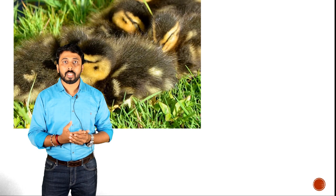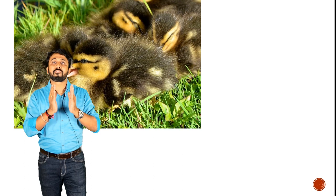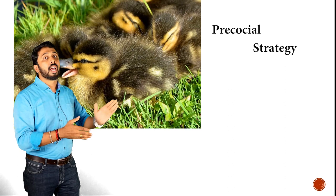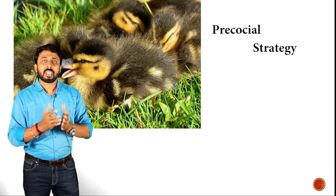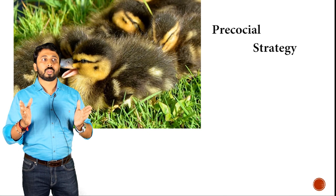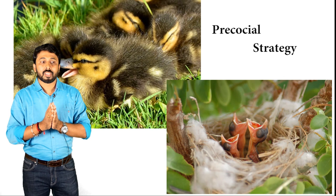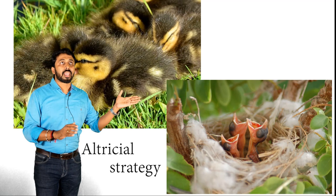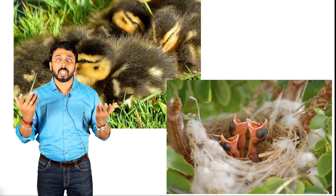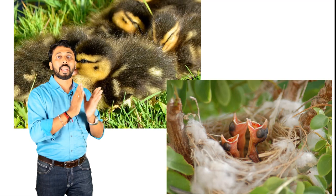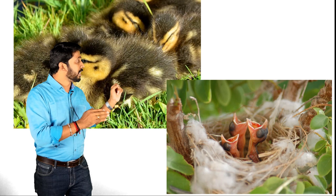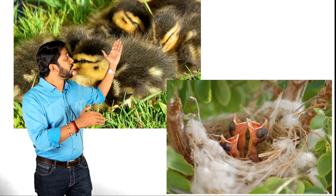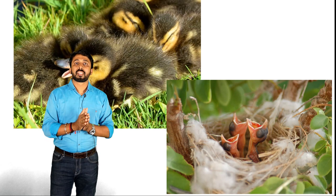Now we will discuss the development of the young one in the initial critical period. Some young ones can defend themselves just after birth — we call them precocial animals. Most ground birds show this behavior, and it is an adaptation to survive in very harsh environments. In contrast, there is another kind of development known as altricial, in which newly born individuals cannot defend themselves and must rely on parental care. Parents must exhibit parental care to protect these vulnerable young ones.